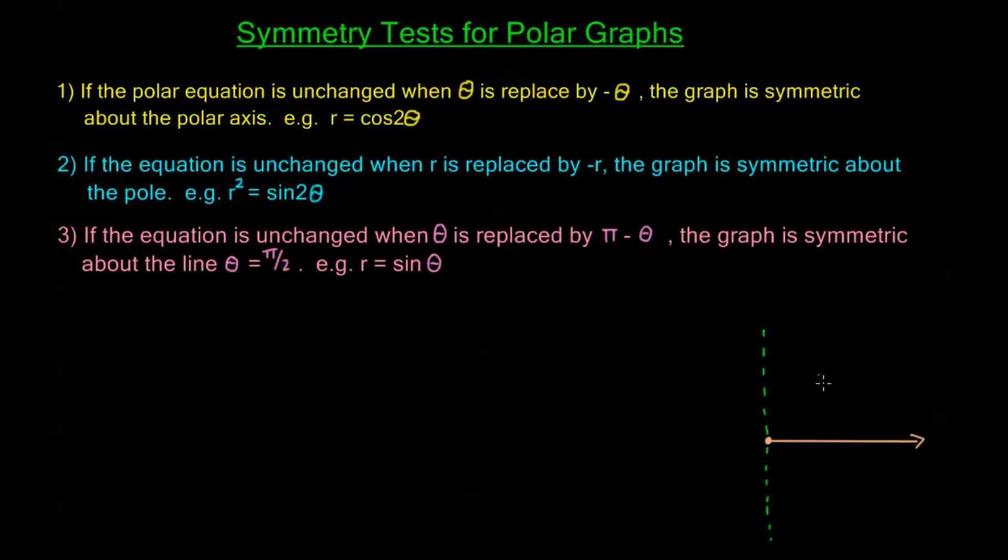So for example, r equals sine theta. Let's look at that in a second, but if I had a leaf over here, and I knew that it was symmetric over theta equals pi over 2, that means I would have another leaf over here. All right, we're back to reflecting over a line, so we're just reflecting straight across this line, theta equals pi over 2.